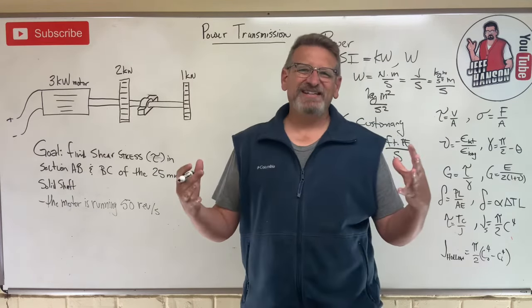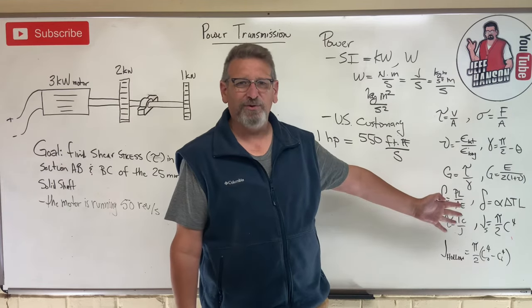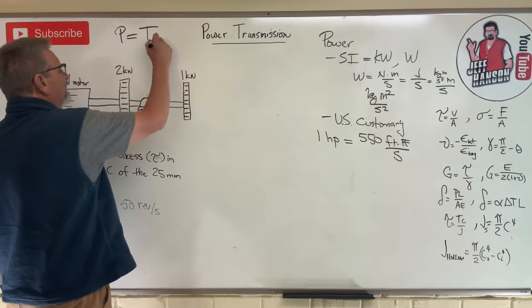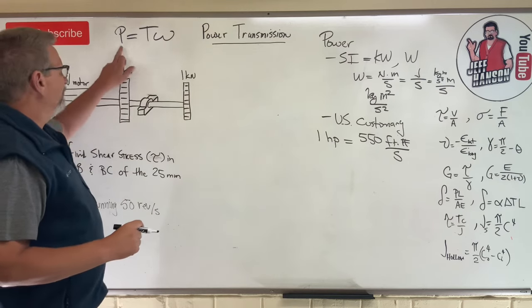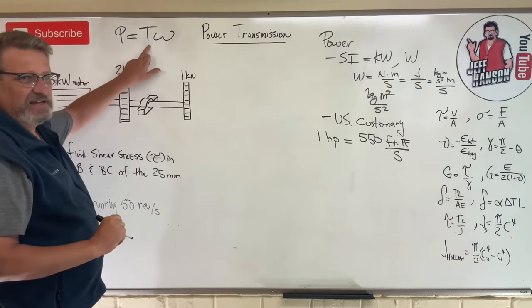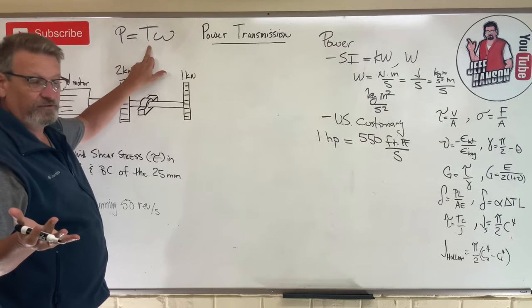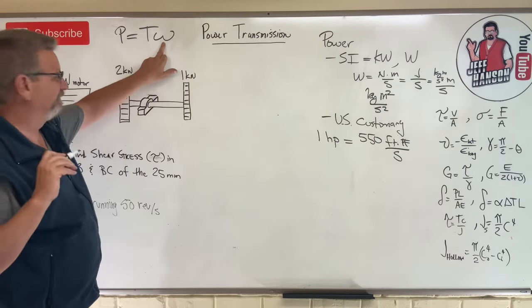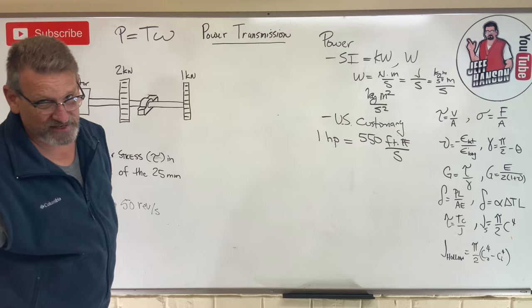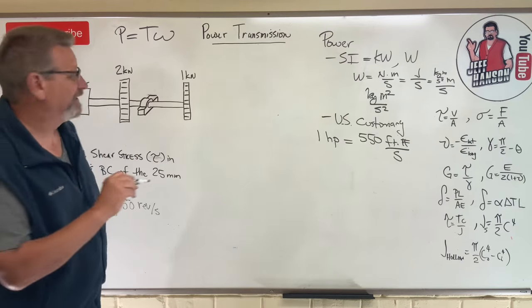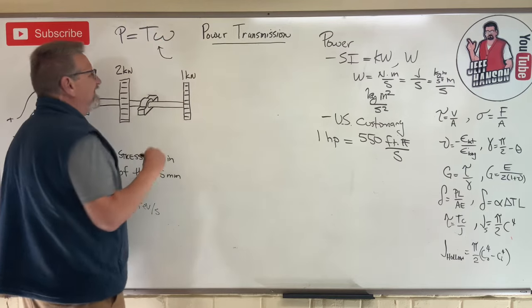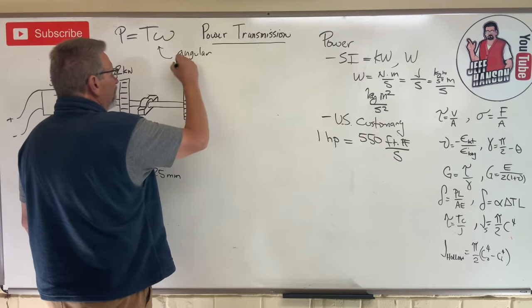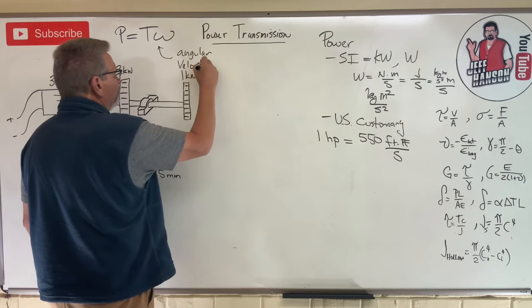What would today's lesson be without a brand new equation? Here we go. Power is equal to T times omega. P is for power. T is torque - that's foot pounds or newton meters. And then you got this guy, new variable of the day. My students call this T booty. You got this guy right here, omega. What is omega? Omega stands for angular velocity.